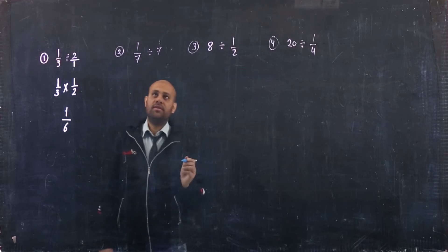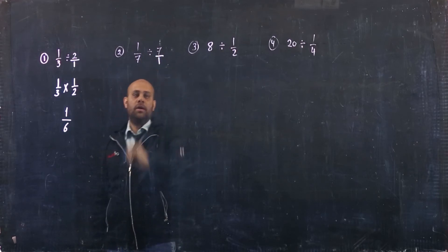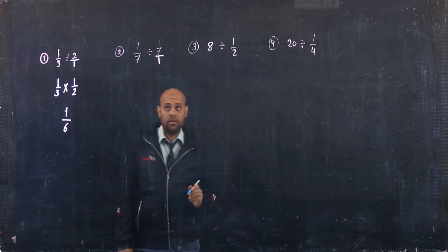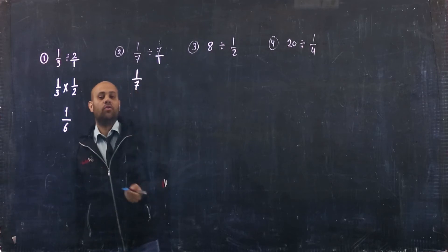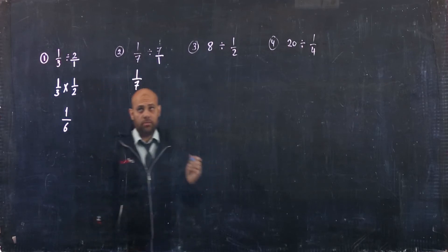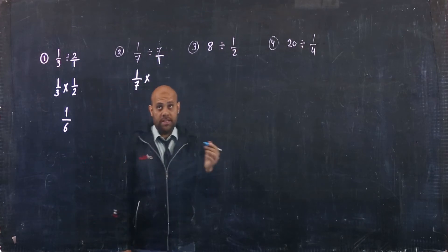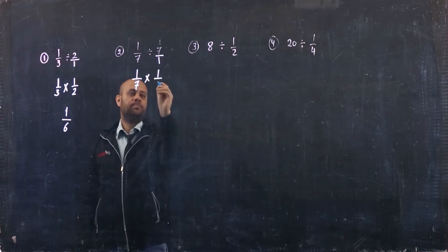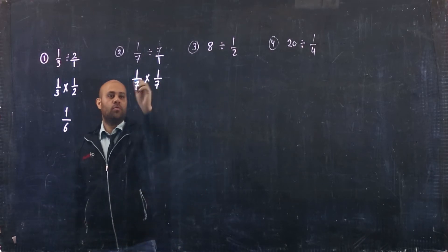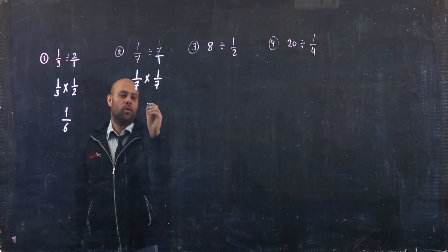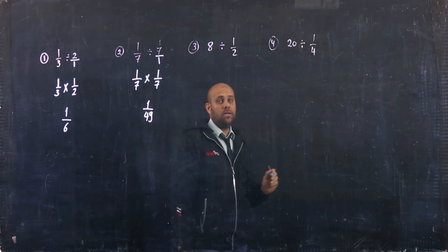Number 2: 1/7 divided by 7. Same idea — you make 7 a fraction with denominator 1, then drop down 1/7 and convert the division to multiplication. Find the reciprocal of 7/1, which is 1/7. Then multiply unit fraction by unit fraction: 1 by 1 equals 1, and 7 by 7 equals 49, so the answer is 1/49.